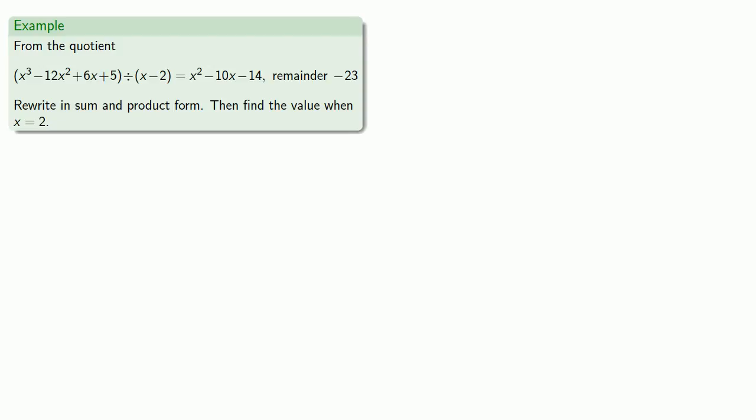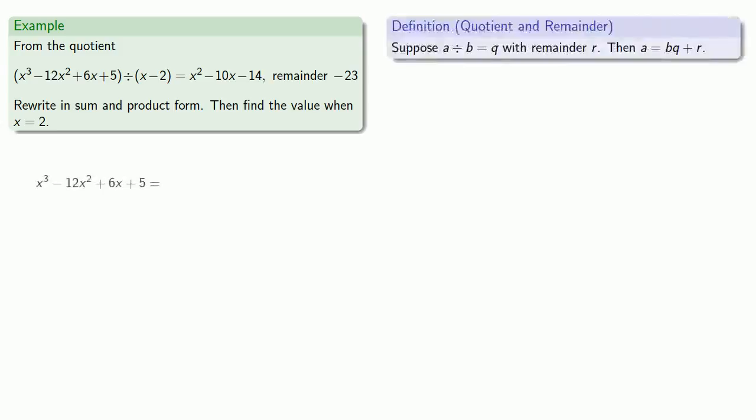So, for example, if you know the result of a polynomial quotient, we can rewrite this in product and sum form. Don't worry, this result is not going to fall out of the sky and hit you on the head. So let's pull in our definition of quotient and remainder. So this says our original dividend is equal to the product of the divisor, X minus 2, with the quotient, X squared minus 10X minus 14, plus the remainder, negative 23.